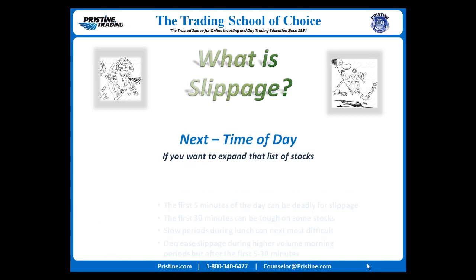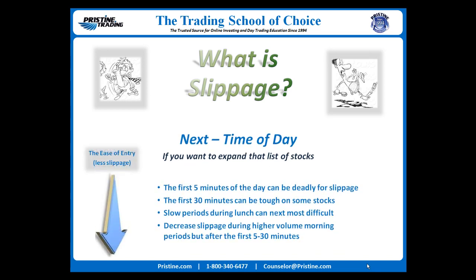The time of day you enter trades makes a big difference also. While the early part of the trading day has very good volume, the first 5 to 30 minutes can be deadly for slippage because there are wider spreads and the volatility is so great that normal rules are sometimes not enforced. At the other extreme are very slow periods like the lunchtime doldrums, which can cause lower volume and wider spreads and also greater slippage.